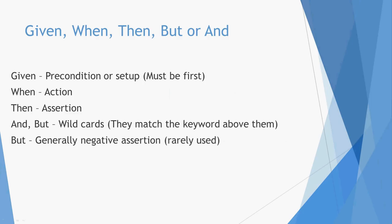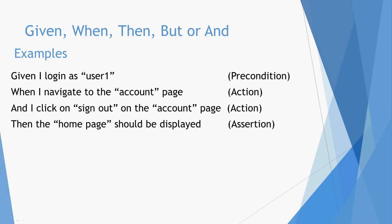With Given/When/Then, you generally have it in this format. A simple example: Given I log in as user one, When I navigate to the account page and I click on sign out on the account page, Then the home page should be displayed. Given I log in as user one is our precondition — it's the setup for the test. The actions are navigating to the account page and clicking sign out, and our assertion is that we end up on the home page.